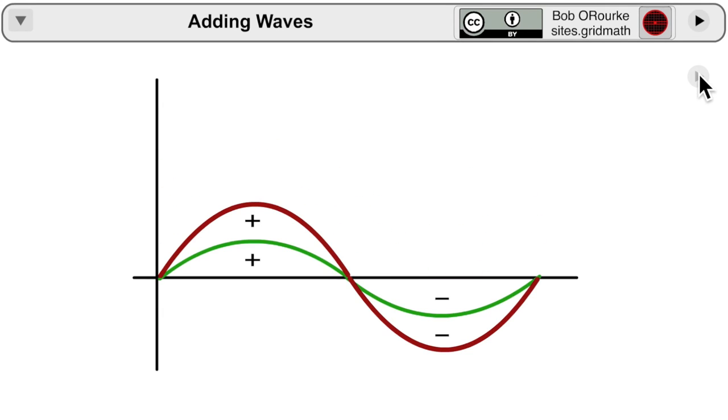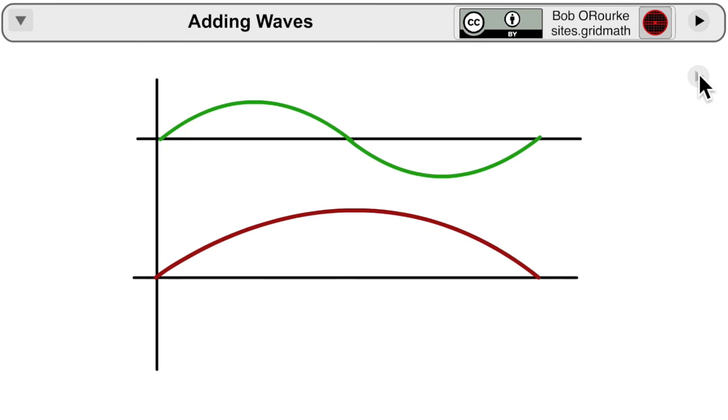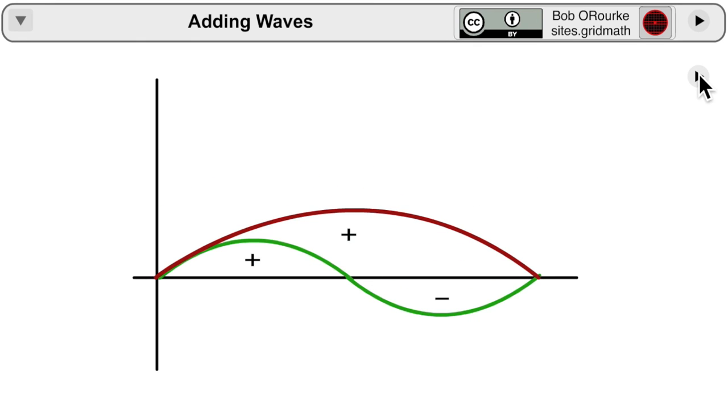Adding waves, you just add their Y values at each point along the X axis. And for same frequency waves, you will just generate a larger amplitude wave with the same frequency. For different frequency waves, a combination of positive and negative values will generate a different form.